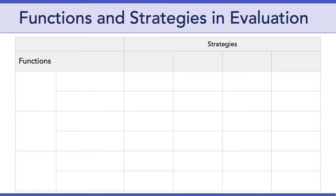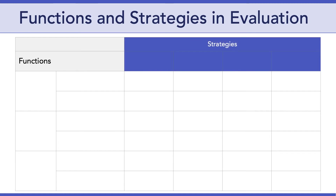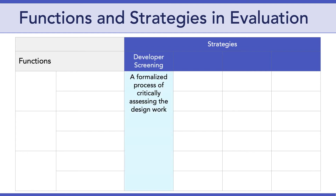Recall that this is a matrix involving functions and evaluation strategies. We've looked at six functions across three stages of testing, so now let's take a look at different evaluation strategies. McKinney and Reeves argue there are four basic strategies used in design research. These strategies should be thought about before selecting specific research methods. The first strategy is developer screening — a formalized process of critically assessing the design work. This usually involves bringing in someone from outside to facilitate the screening process, which allows the whole design and development team to participate. Having an outside facilitator can encourage everyone to engage more critically and bring increased objectivity to the process. Common methods that go with this strategy include focus groups, questionnaires, or checklists.